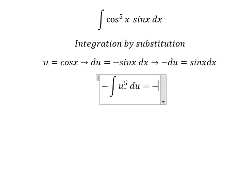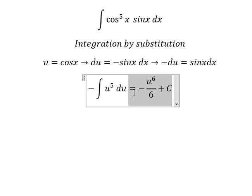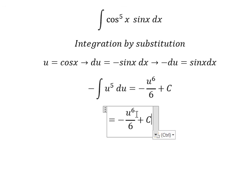The integration of this gives us negative u to the sixth over 6 plus C, which is negative cosine x to the sixth over 6 plus C. This is the end, thank you for watching.